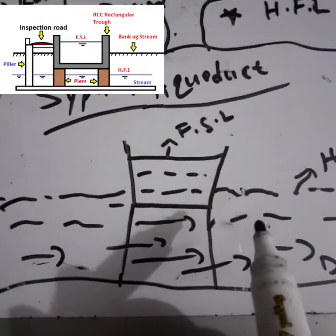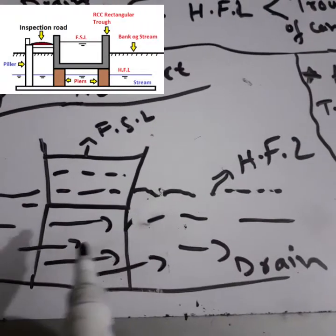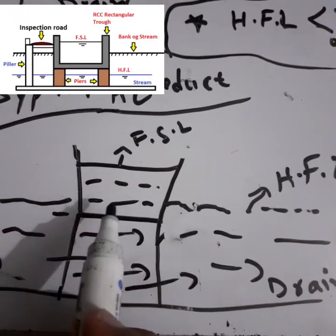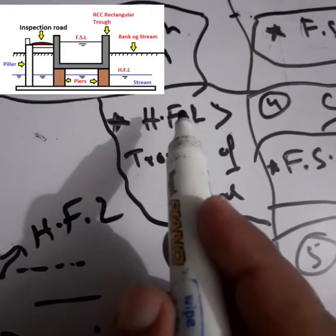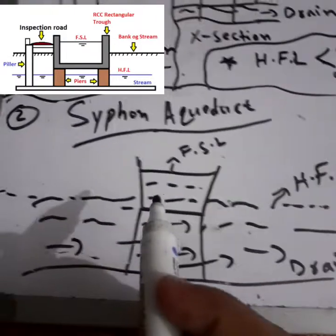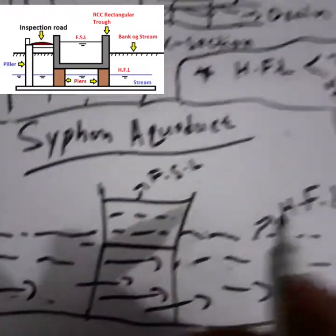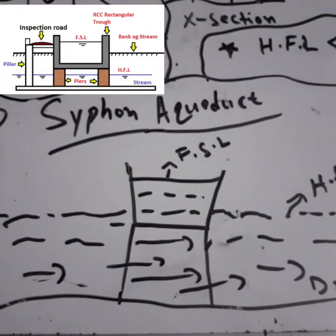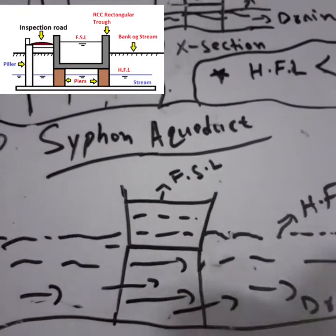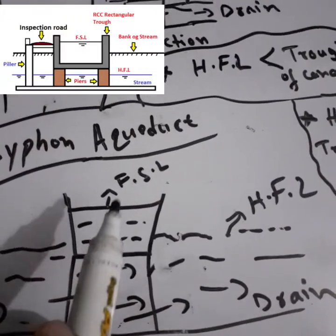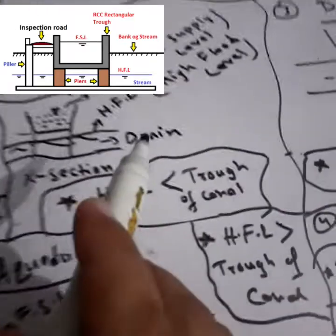The other type is also canal over drain, but the only difference is that the drain HFL water level is above the trough of the canal. You can see here the HFL level is above the trough of the canal — this is called a Siphon Aqueduct. A siphonic phenomenon occurs here, which is why it is named so. The only difference between an aqueduct and a siphon aqueduct is whether HFL is above or below the trough level of the canal.